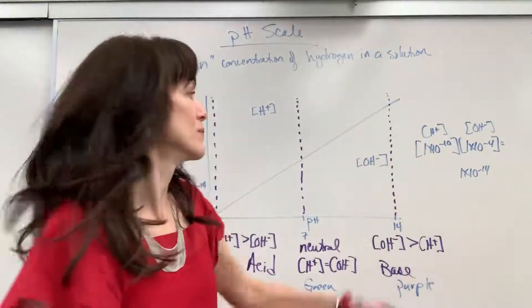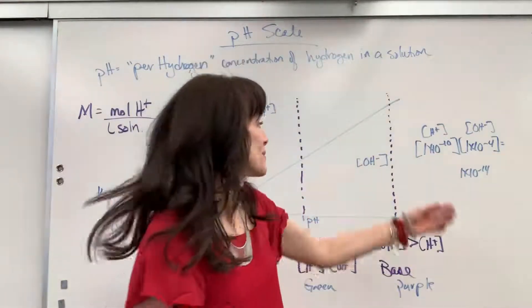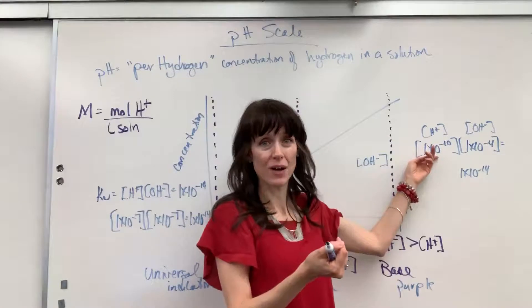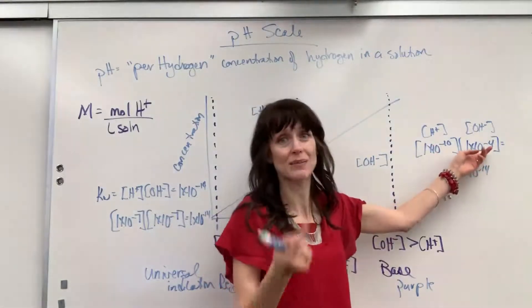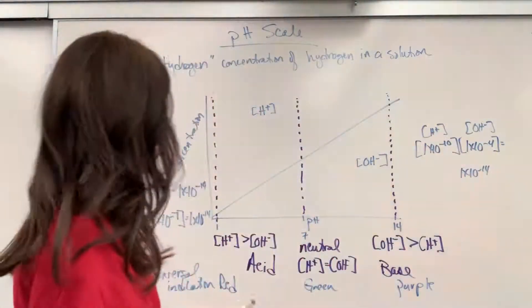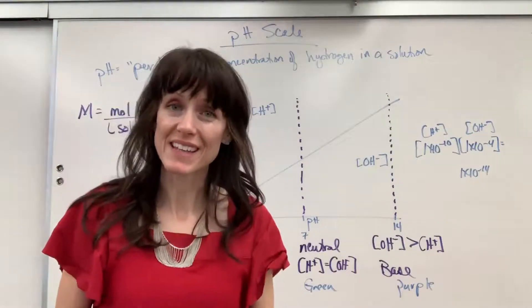Now be careful. Remember, these exponents and concentrations, they're negative. So the hydrogen, 10 to the minus 10, that's a smaller amount, smaller concentration than 10 to the minus 4. Just be careful that those are negative. That's a great discussion on pH scale. Have a good day. Thanks.